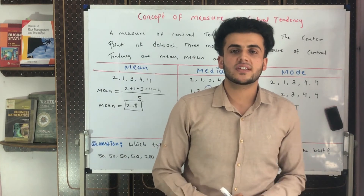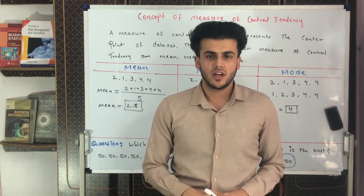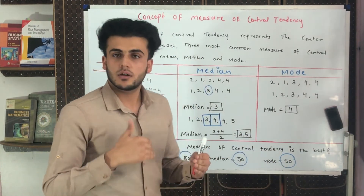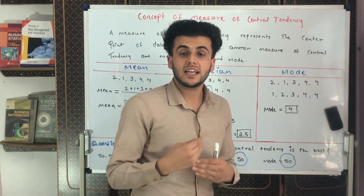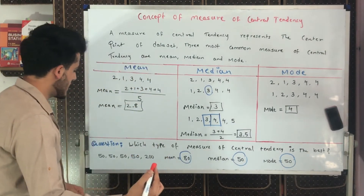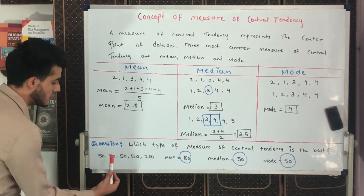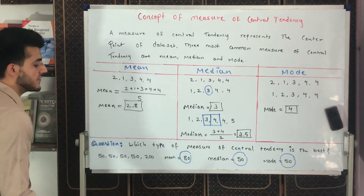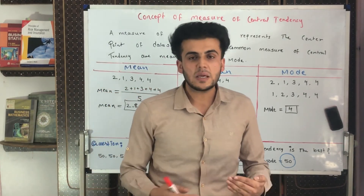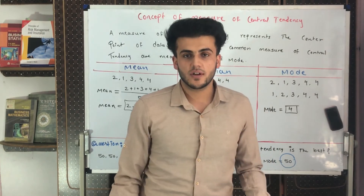A common question is: which measure of central tendency is best? There is no exact answer, because depending on the data set, any one of them could be most appropriate or unrealistic. For example, consider a person's weight in kg recorded over five days: 50 kg, 50 kg, 50 kg, 50 kg, and 200 kg. That 200 kg value is something impossible — a person who is 50 kg cannot suddenly become 200 kg.